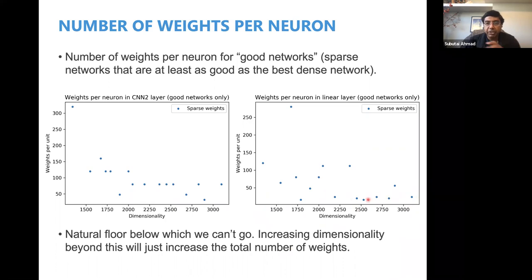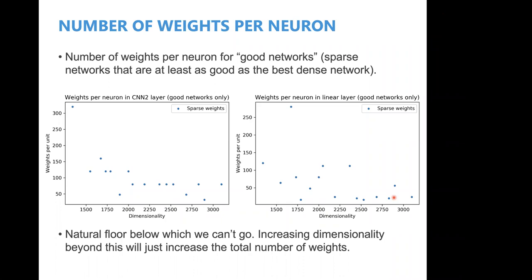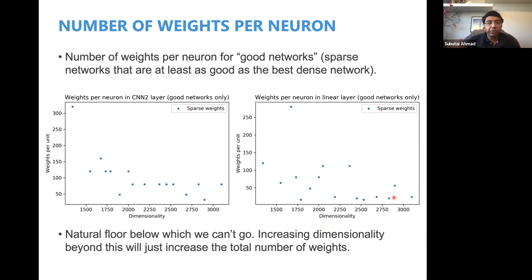That's interesting and consistent with my intuitions. What this means is that if you can't go below a certain floor, and you start increasing dimensionality beyond that point, you're just going to increase the total number of weights — because if you need a minimum number of weights per neuron and you increase the number of neurons, you're not going to reduce the number of weights, you're going to increase the total. So there's some natural maximum dimensionality point, and the extra weights might help with noise robustness. At least in terms of accuracy, there's some sort of natural floor here. And I think Jeff won't be surprised by this — this is what we expected in HTMs as well.